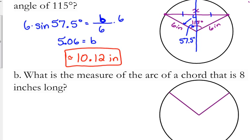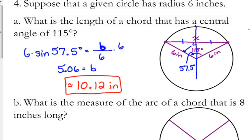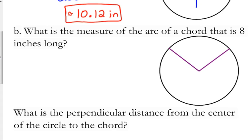So, let's twist this question around. We're going to reset. The radius is still 6 inches. But, we're going to reset. And, we're going to say, what is the measure of the arc of a chord that is 8 inches long?